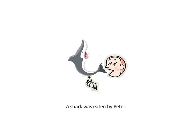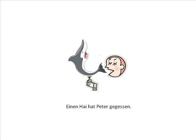We can do that in English too, but we'd add in extra words to show what we were doing. For instance, we could use the passive and say 'A shark was eaten by Peter,' or restructure the sentence and say 'It was a shark that Peter ate.' German doesn't need to do this to put the shark in first position — it can just use its case system to show who was doing the eating and who was being eaten.